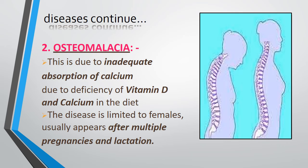The second is osteomalacia — due to inadequate absorption of calcium caused by deficiency of vitamin D and calcium in the diet. This disease is limited to females and usually appears after multiple pregnancies and lactation, which deplete vitamin D and calcium in the body.